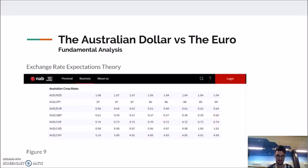The exchange rate expectation theory suggests that expectations about future exchange rates can become a self-fulfilling prophecy. For example, if a currency is expected to appreciate, speculators will buy it, increasing demand and causing it to appreciate. Figure 9 shows the National Australia Bank forecast for the AUD to Euro over the next five periods, predicting the rate will fall from 0.67 to 0.60. Assuming speculators are rational investors, they will short this currency, and the self-fulfilling prophecy will eventuate, leading to a fall in the AUD to Euro.